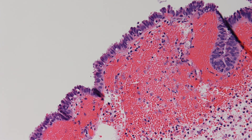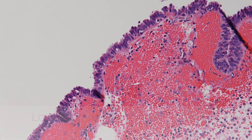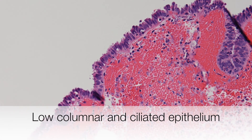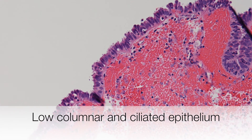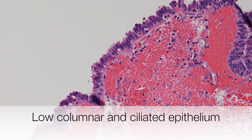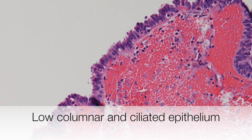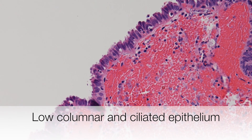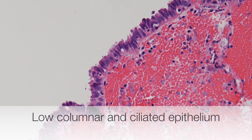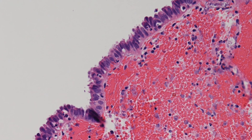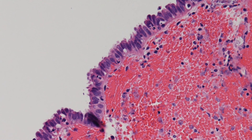This is the typical epithelium covering the appendix testis — here it is low columnar and focally ciliated.